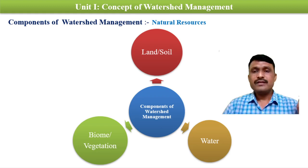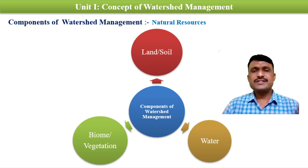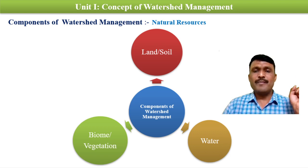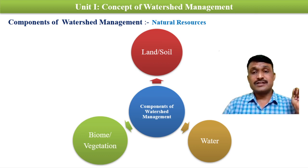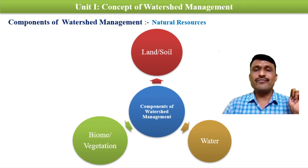Three natural resources are the major components of watershed management. The first component is land and soil. In any watershed, its geographical area means land and soil — both are common. The study of soil resources, including its chemical, physical and hydrological properties, is also essential for land use planning. Therefore, land and soil is the first component of watershed management.